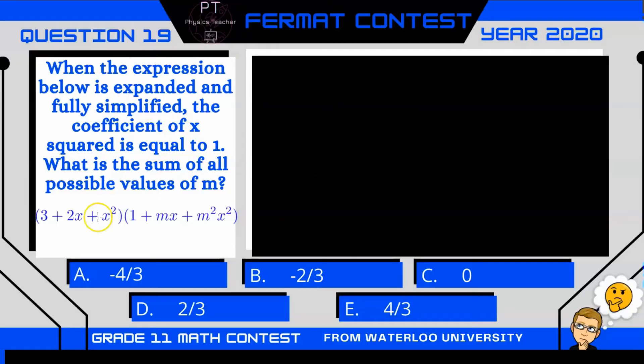Alright, so this question says when this expression below is expanded and fully simplified, the coefficient of x squared is equal to 1. For that to be true, what is the sum of all possible values of m? Alright, so let's expand this.